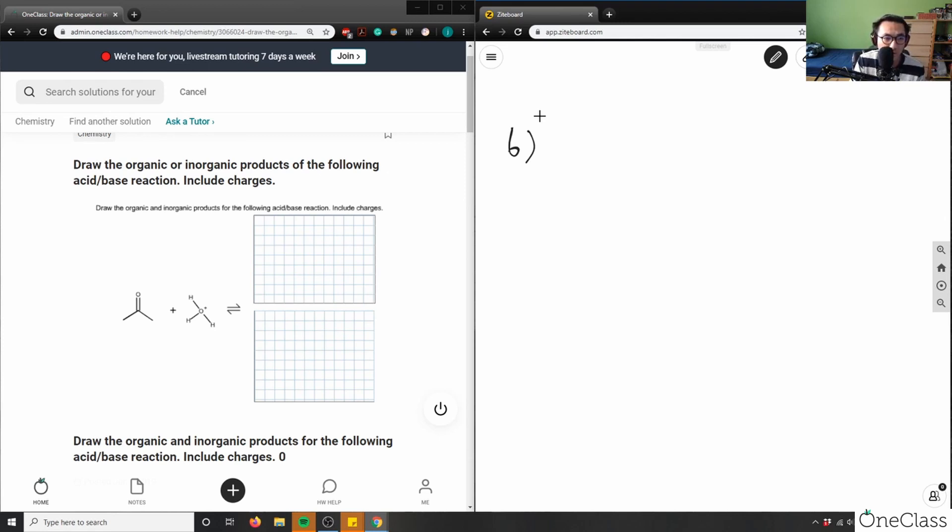Okay, so it says here draw the organic or inorganic products of the following acid-base reaction. So I have here, this is a ketone, propanone or propane-2-one. And then I'm going to have this H3O plus, so H-H-H, and I'll draw my positively charged as red, so this is positively charged.